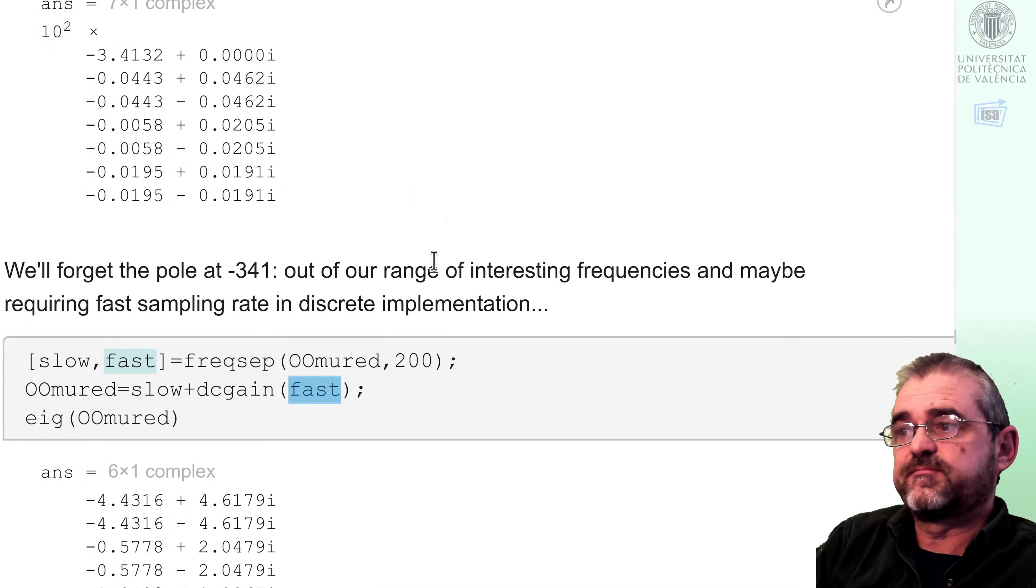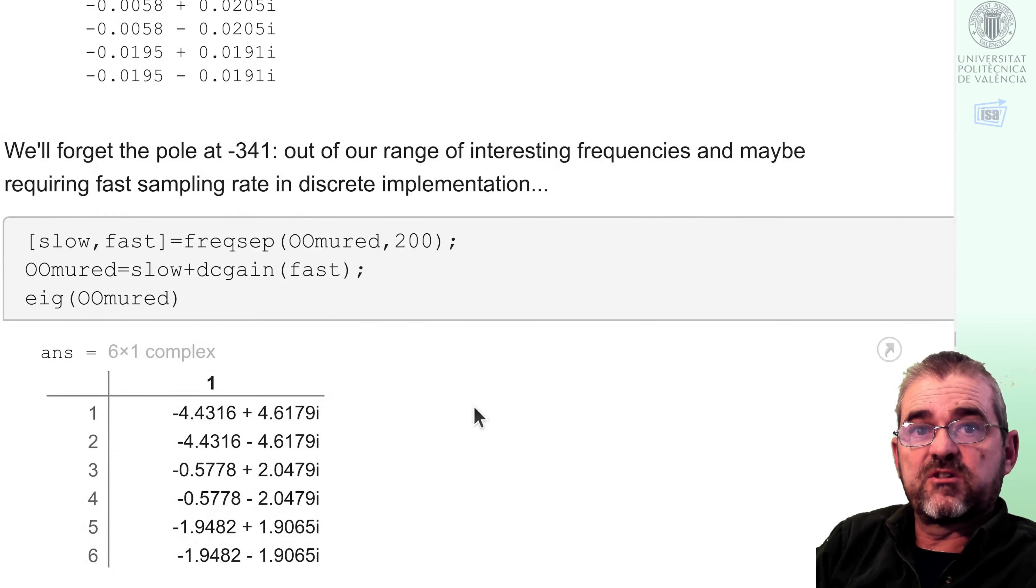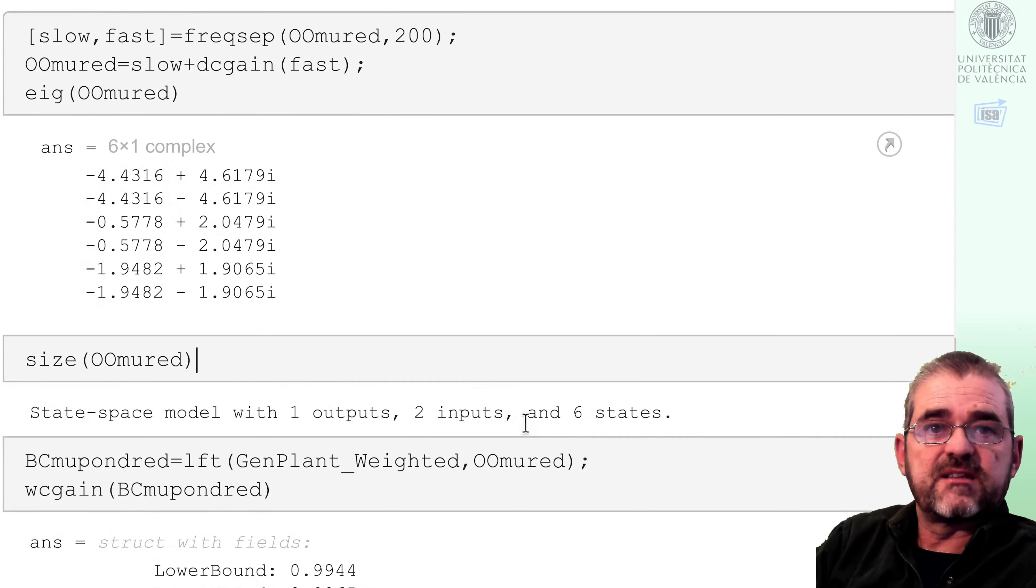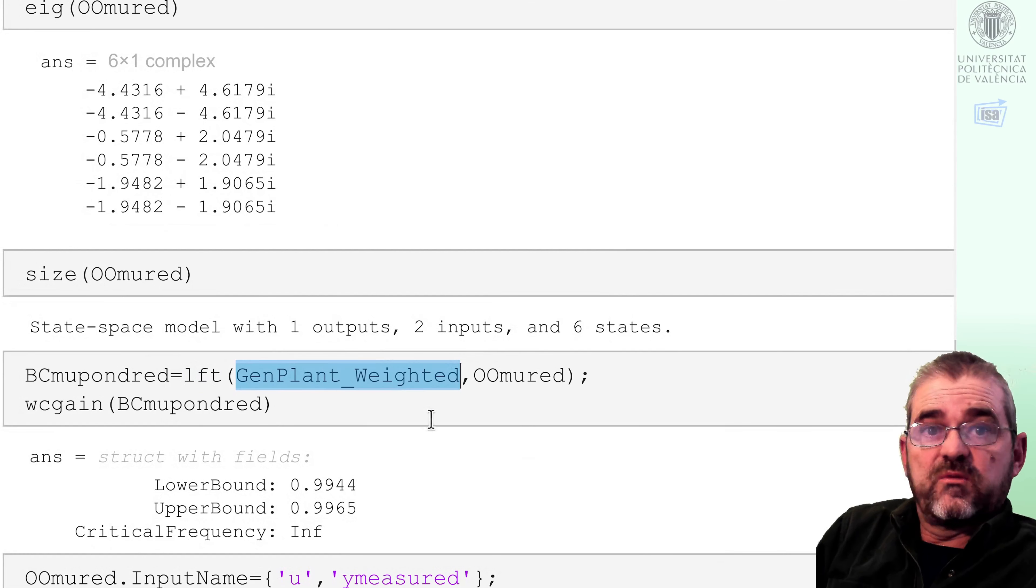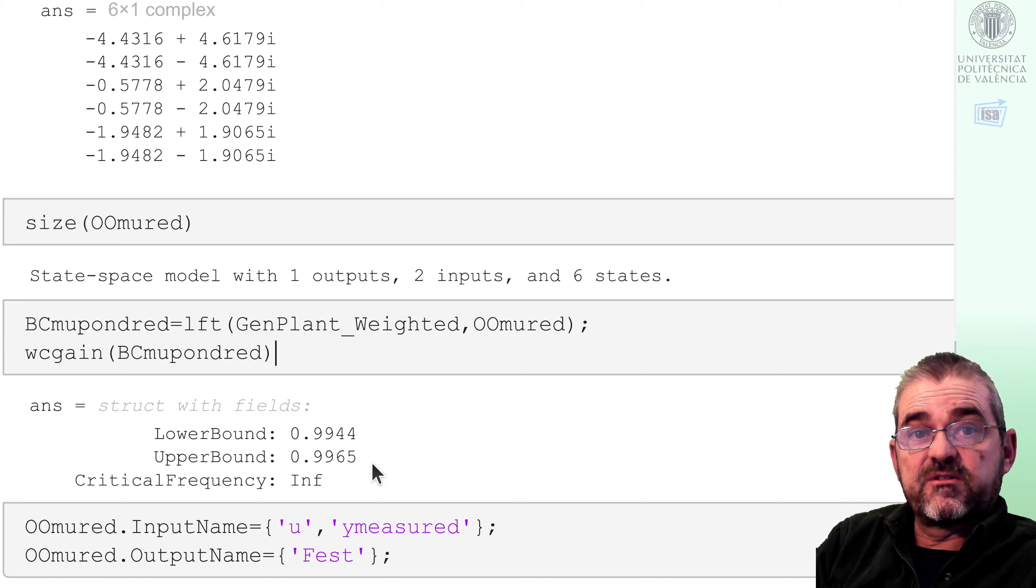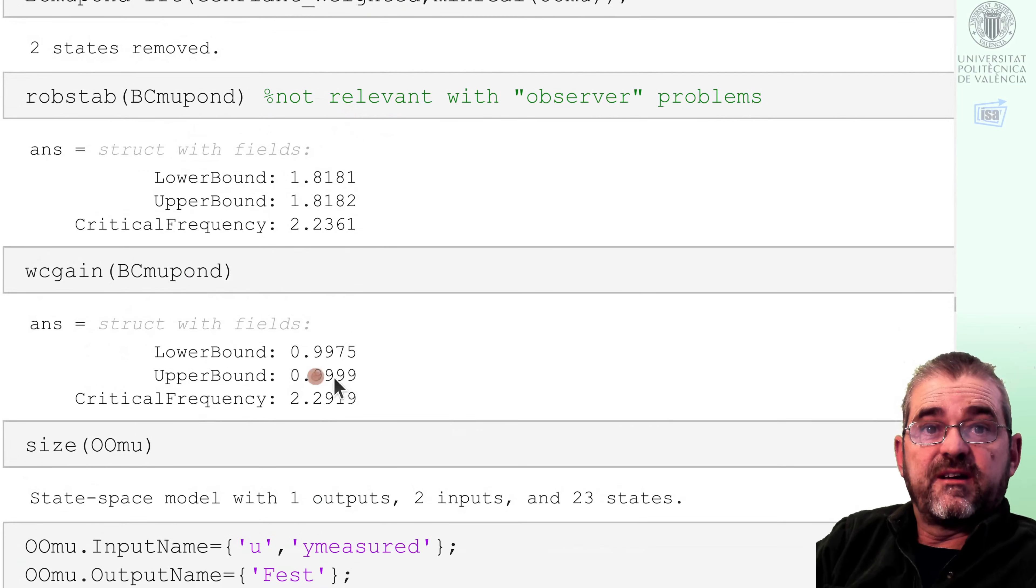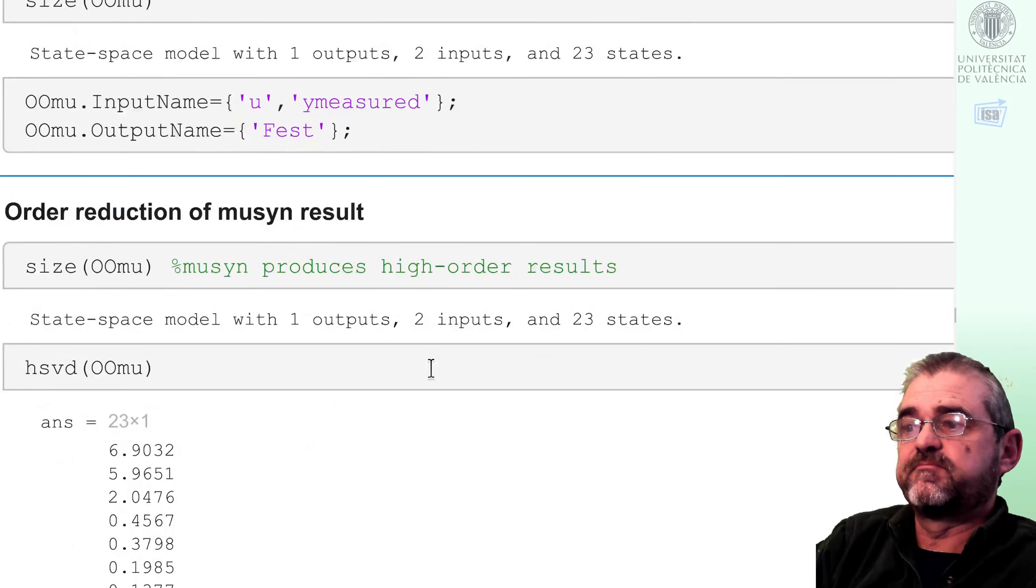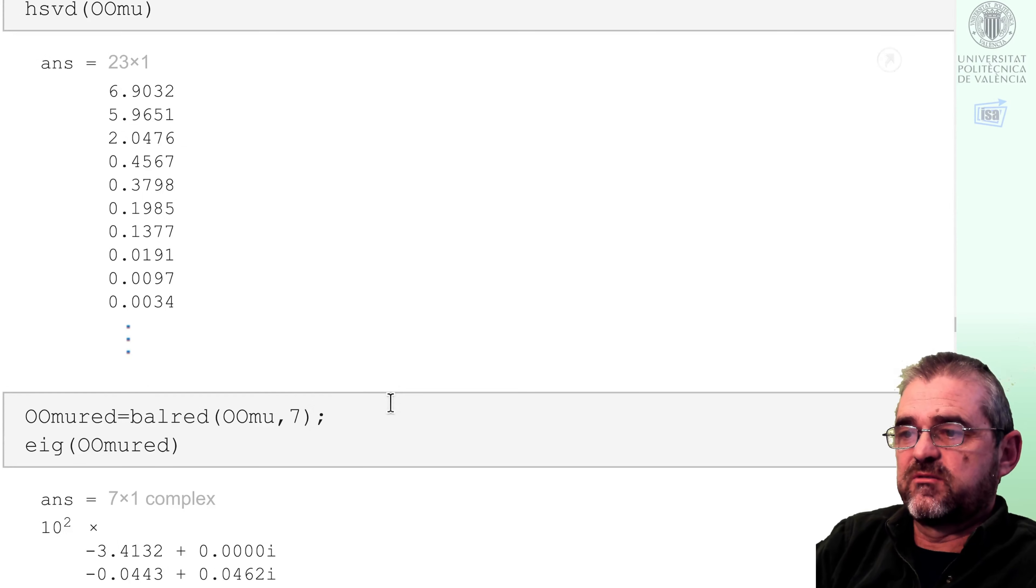Then we get these six poles. So we will check whether we have lost performance or not with this sixth-order observer, and if we close the loop with an LFT interconnection of the weighted generalized plant and this reduced observer, we get a worst-case gain of 0.9965, so we're kind of lucky in the sense that I would have expected a performance loss due to model order reduction, but it seems that performance loss is within the numerical tolerances of the worst-case gain command, so it's kind of giving the same performance value as with the 23rd order initial observer. It's a matter of luck and numerical precision.